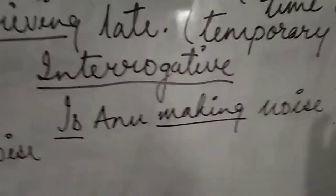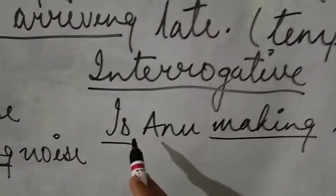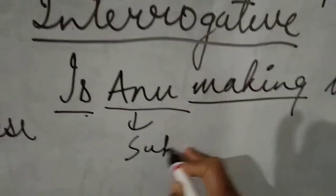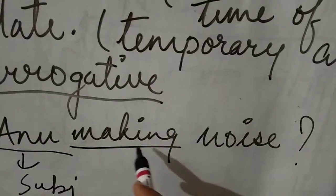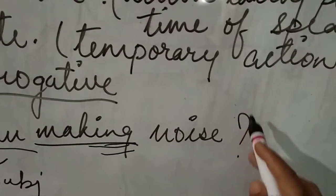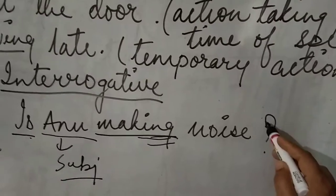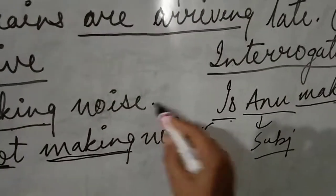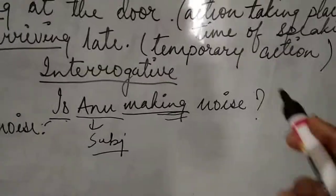Now let's come to the interrogative sentence. In an interrogative sentence, the auxiliary verb comes first, then the subject of the sentence, then the main verb with the ing form, and at the end a question mark. In a negative sentence the punctuation is a full stop, while in an interrogative sentence the punctuation is a question mark.